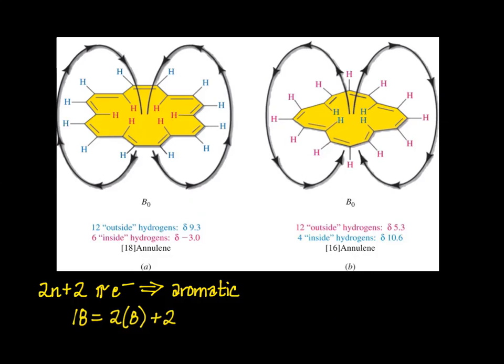Exactly the opposite happens with 16-annulene. Now it's the outside protons that are more shielded, their chemical shift is 5.3 parts per million, and the inside protons that are less shielded. Their chemical shift is 10.6 parts per million. This reversal of shielding can only mean that the direction of the magnetic field is the reverse of that we observe in 18-annulene. Thus, 16-annulene, which has 4n pi electrons, is anti-aromatic. It not only lacks an aromatic ring current, its pi electrons produce exactly the opposite effect when placed in a magnetic field. Score one for Huckel.